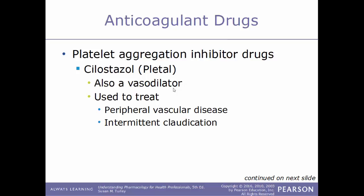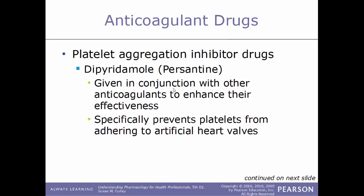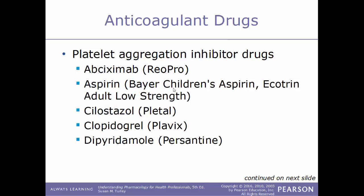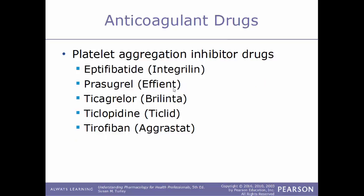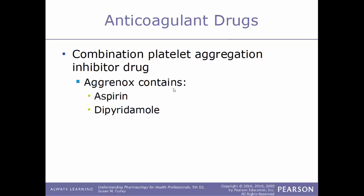Examples of platelet aggregation inhibitors: cilostazol, sold under the trade name Pletal — a vasodilator used to treat peripheral vascular disease and intermittent claudication (pain in the legs caused by insufficient blood flow during exercise); dipyridamole, sold under the name Persantine — given with other anticoagulants to enhance effectiveness and specifically prevents platelets from adhering to artificial heart valves; abciximab, sold under the trade name ReoPro; generic aspirin (trade names: Bayer, children's aspirin, Ecotrin); clopidogrel under the name Plavix; eptifibatide under the name Integrilin; prasugrel under the name Effient; ticagrelor under the name Brilinta; ticlopidine under the name Ticlid; and tirofiban under the name Aggrastat.